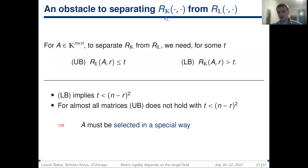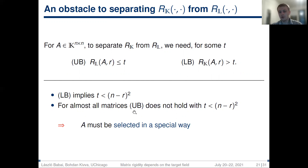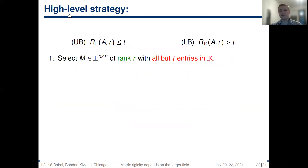This gives an obstacle for a simple counting separation between rigidities over different fields. Indeed, to show such separation for some threshold t, we need rigidity over L to be at most t and rigidity over K to be strictly greater than t. Since rigidity is always bounded by (n − r)², this lower bound on rigidity over K implies t is strictly less than (n − r)². So we need rigidity over L to be strictly less than (n − r)², which is not satisfied by almost all matrices — meaning we must construct matrix A in a special way.